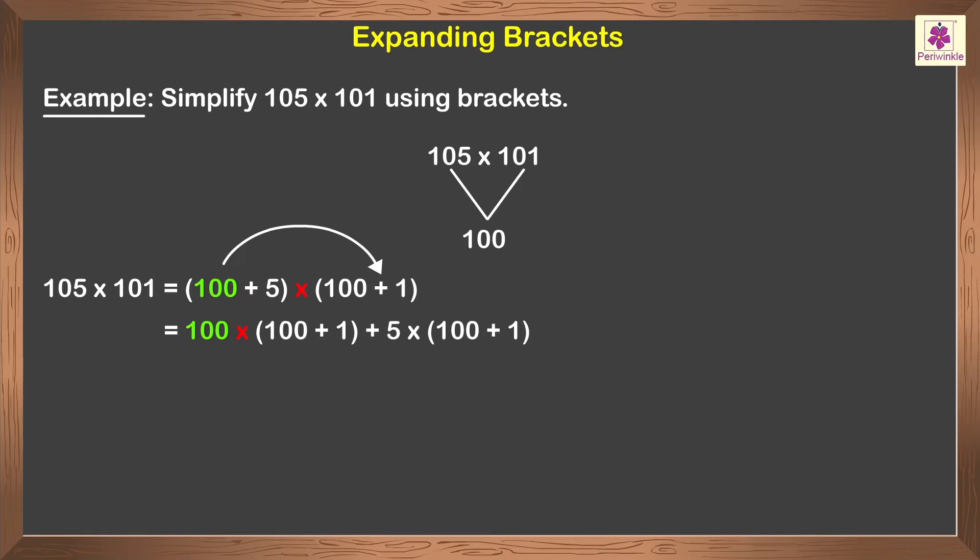Thus we get 100 multiplied by (100 plus 1) plus 5 multiplied by (100 plus 1), which is equal to 10,000 plus 100 plus 500 plus 5, which equals 10,000 plus 600 plus 5, which equals 10,605.